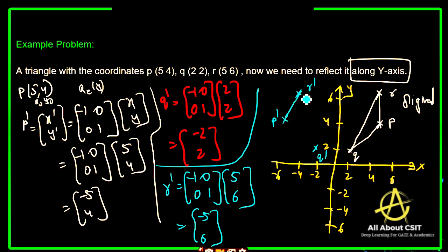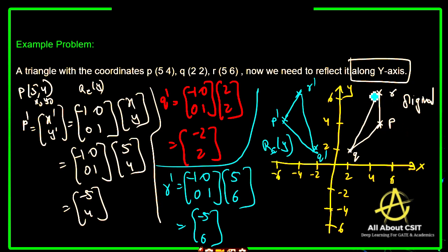This is the reflected image — the reflection about the y-axis. Did you find the difference? The original coordinates are on the right side. When we reflect along the y-axis, the mirror image appears on the left side. That is how 2D reflection works. If you are still facing any doubts, please let me know.